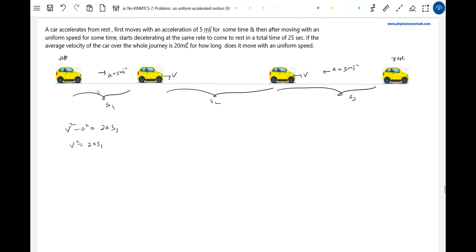Similarly, for the deceleration phase, it comes to rest. 0 squared minus V squared equals 2 times minus A times S3. So S1 equals S3.